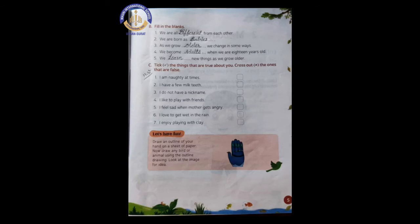Now number 2. We are born as? When we are born, what are we? Babies. So the answer is babies. So spelling of babies is B-A-B-I-E-S.